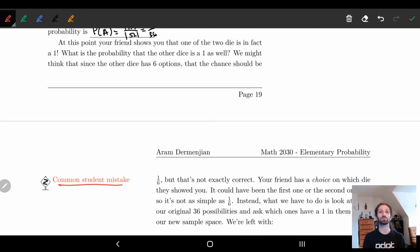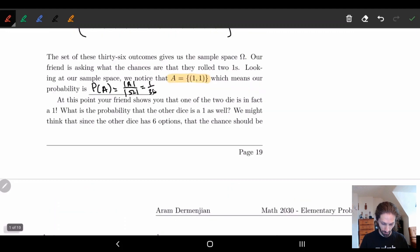And the reason why is because your friend had a choice on which die to show you. Since they had a choice on which die to show you, they could have shown you the left one or the right one. So there's actually a lot more options.